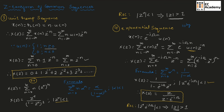Similarly, if the exponential sequence is given as exponential to the power of j omega n times U of n, we can write the Z-transform as Z divided by Z minus exponential to the power of j omega. You can solve this in the same way.